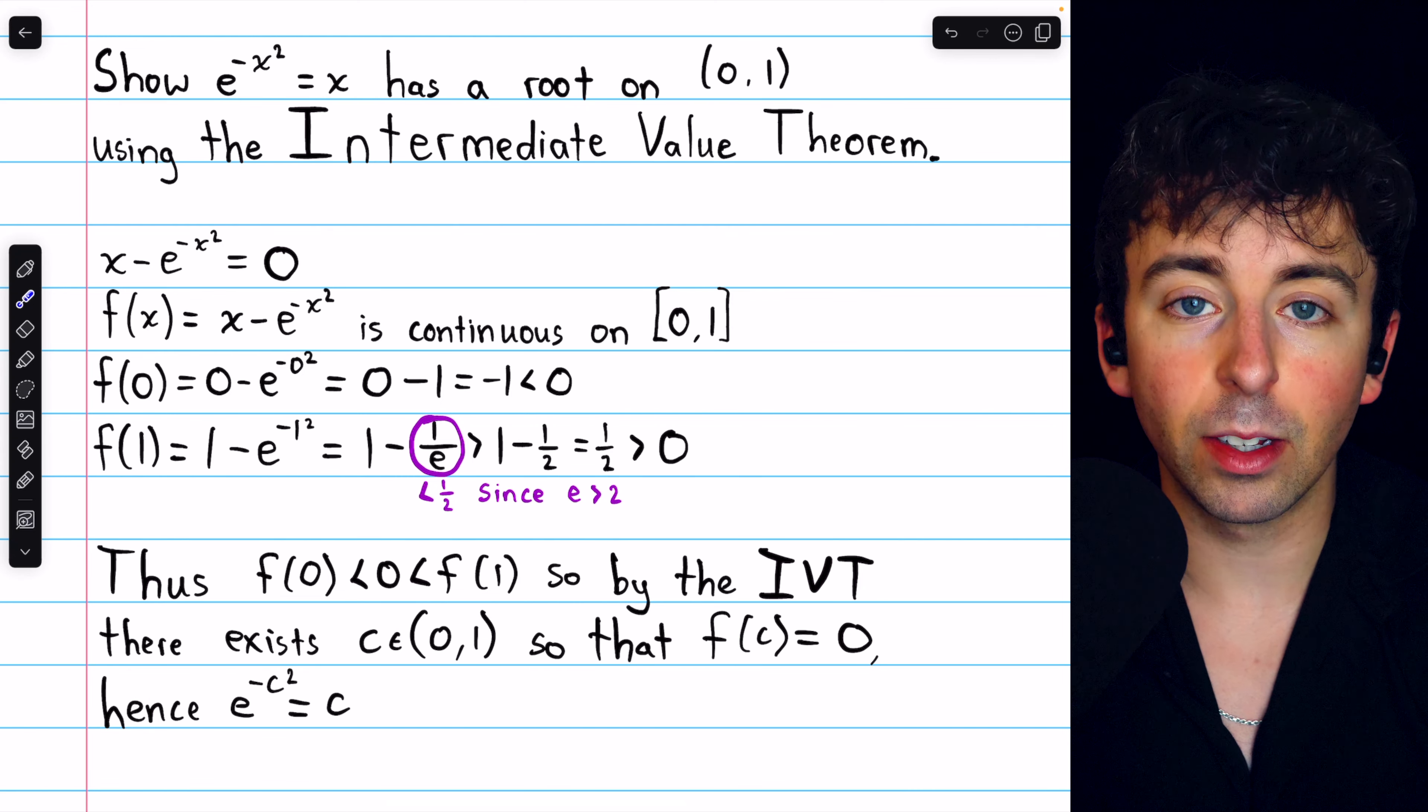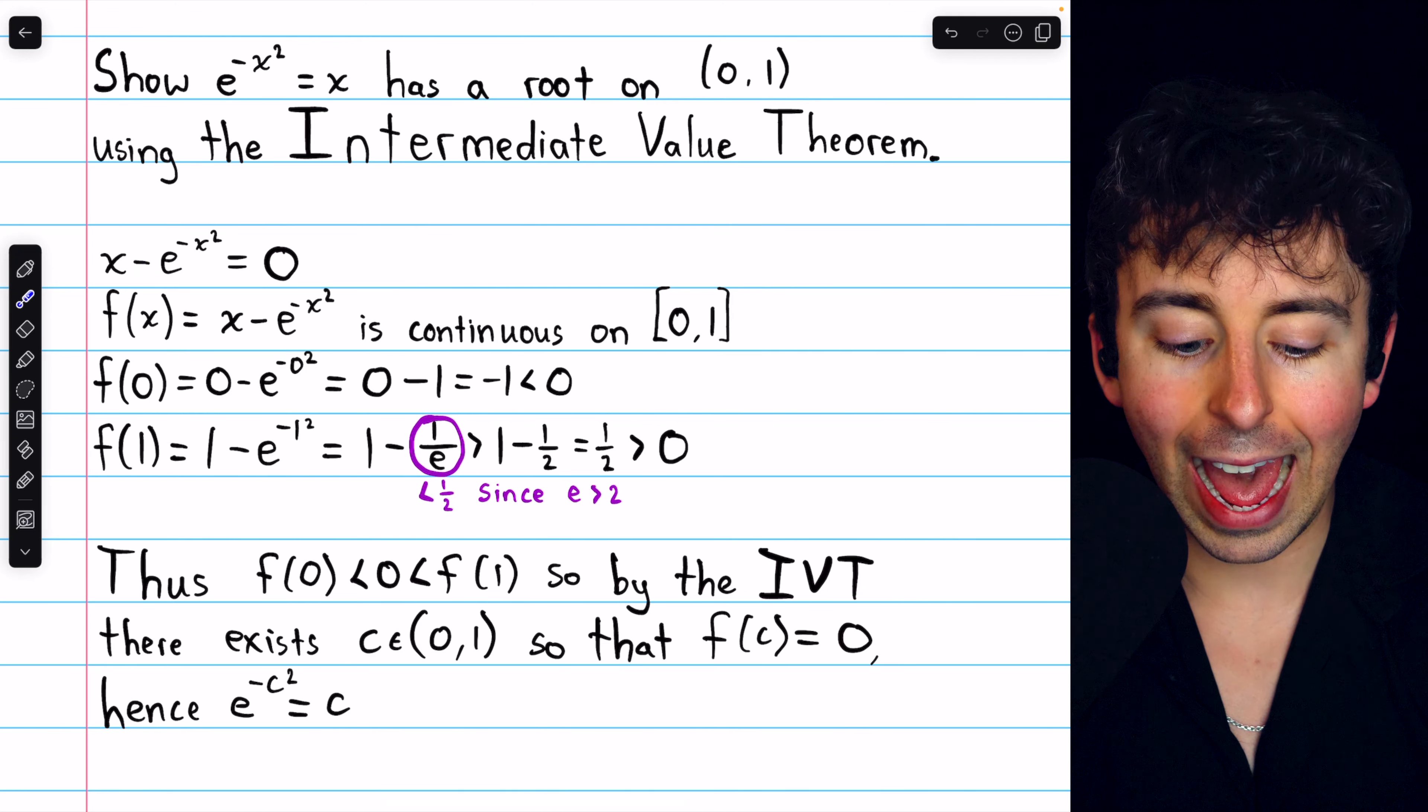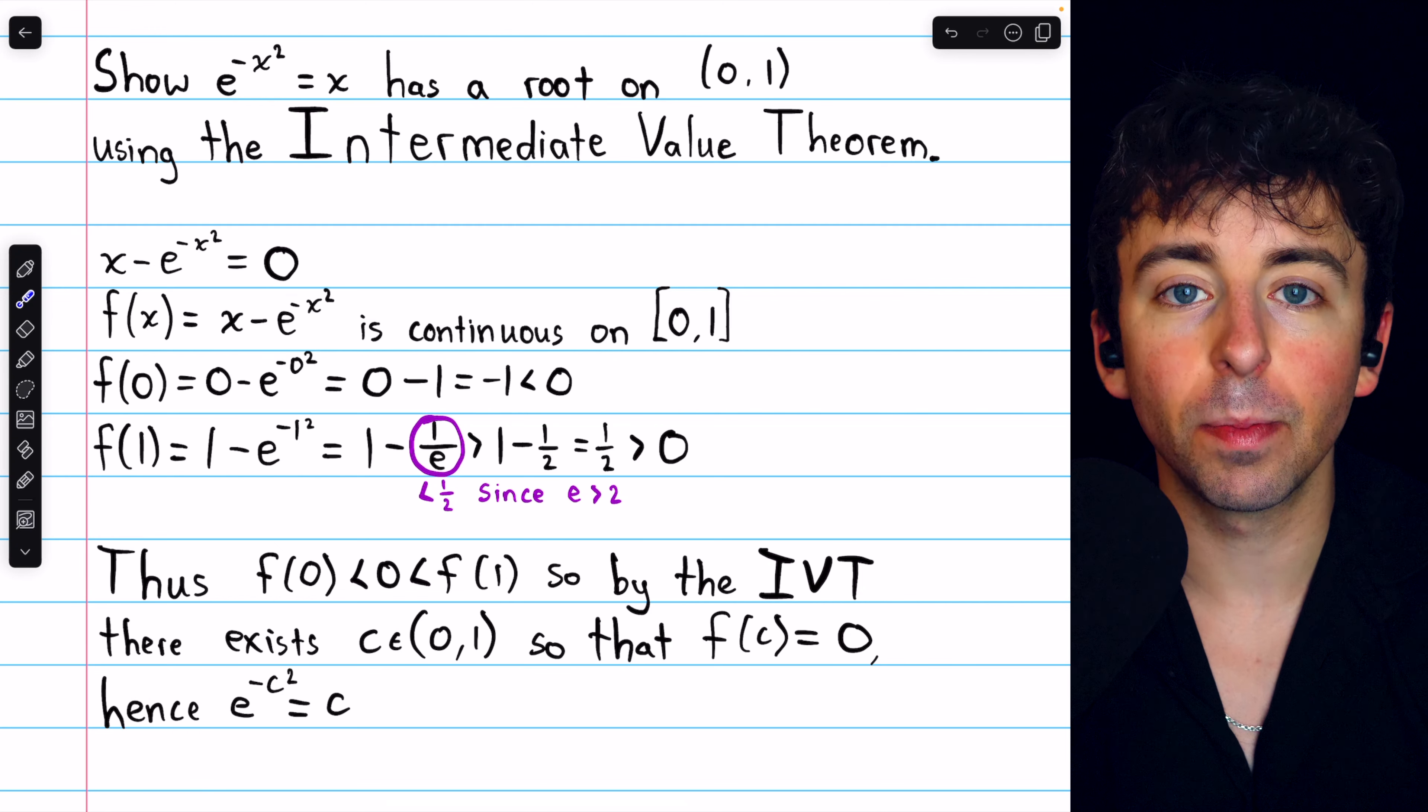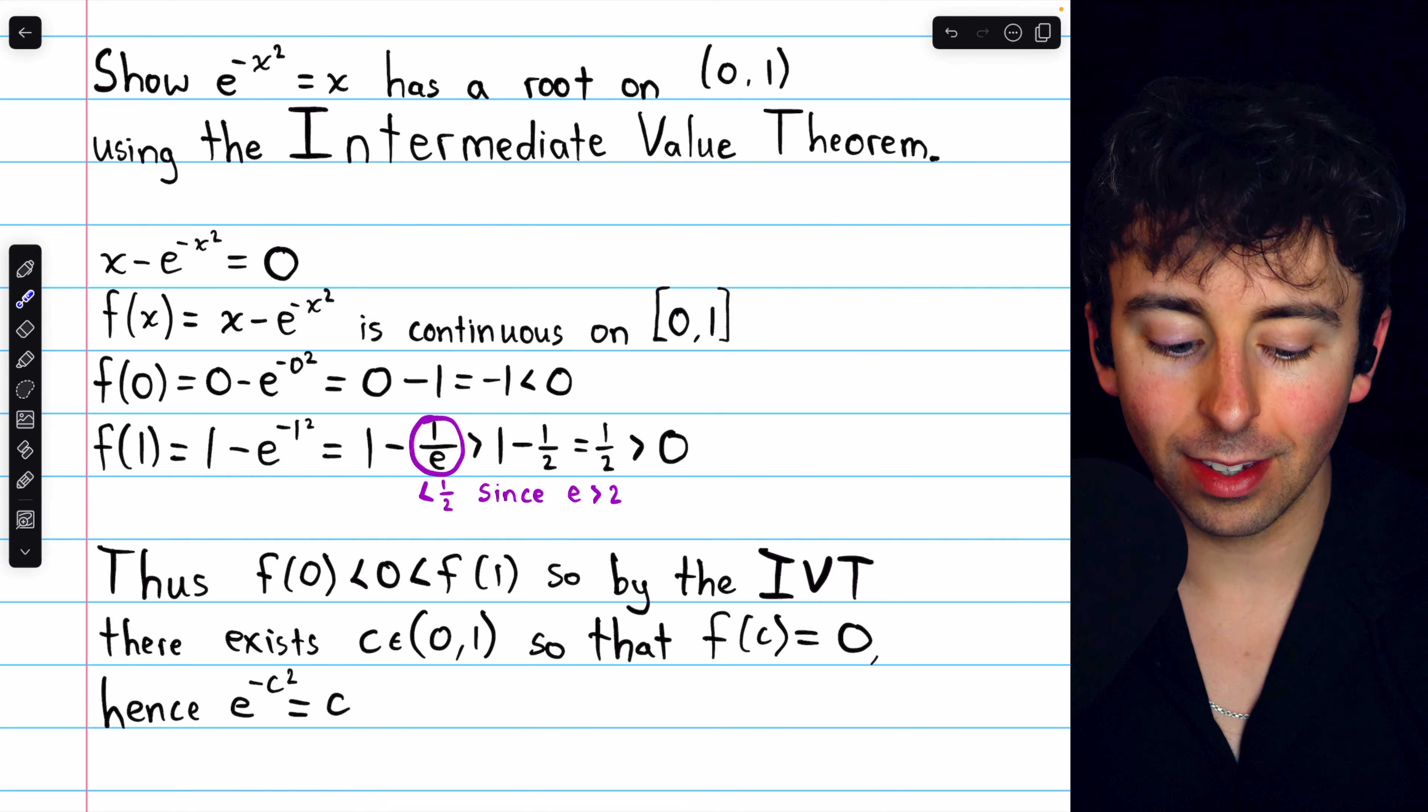But if plugging in x equals c makes this expression equal to 0, we could add e to the negative c squared to both sides and see clearly that it's a solution to our original equation: e to the negative c squared equals c.